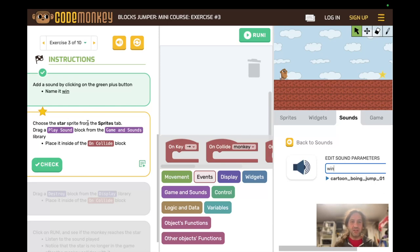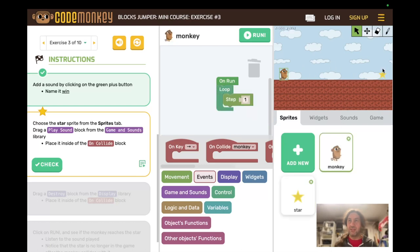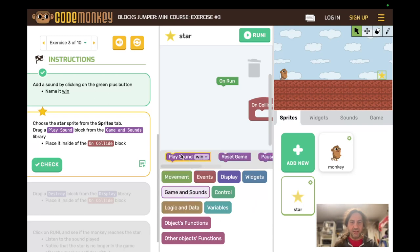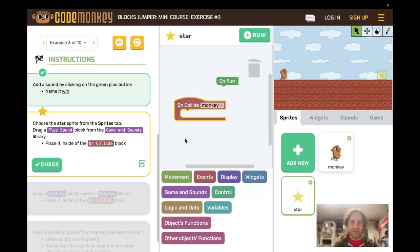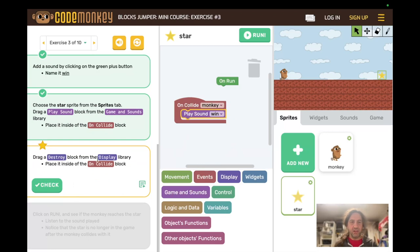And as soon as I've typed win, win all lower case it goes on to the next element. Now it says choose the star sprite from the sprites tab. You can do that by going to sprites and clicking star. It just auto selected star. Or you can click the star on the actual game board here either way. And then we want to drag a play sound block from the game and sounds library and put it in the on collide block. Check it.